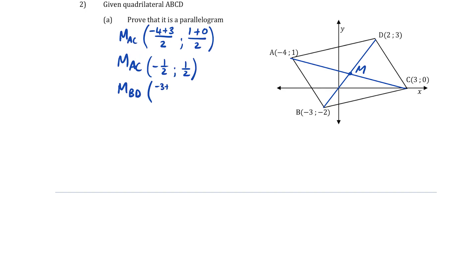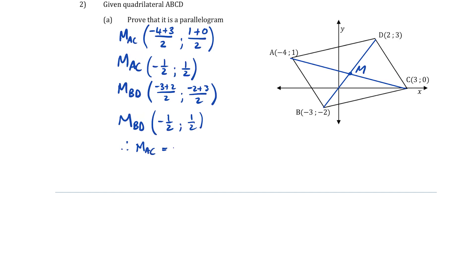Simplifying: negative 4 plus 3 is negative 1, divided by 2 is negative one-half; 1 plus 0 is 1, divided by 2. Now the midpoint of BD: x-values negative 3 plus 2, divided by 2; y-values negative 2 plus 3, divided by 2. We again get negative one-half and one-half. Since the midpoint of AC equals the midpoint of BD, ABCD is a parallelogram, because the diagonals of a quadrilateral bisect each other.